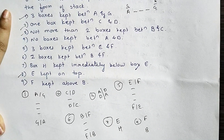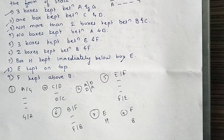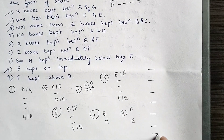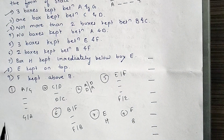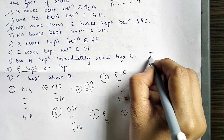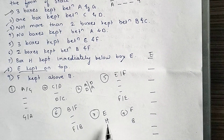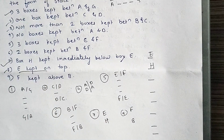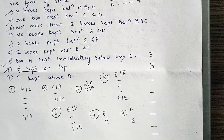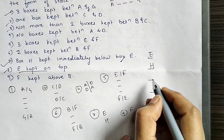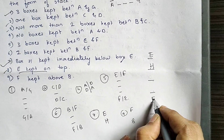We have 8 positions in the stack — 1 through 8. Starting with the direct statement: E is kept on the top, so E is at position 1. H is immediately below E, so H is at position 2. Next, 3 boxes are kept between E and F — counting 1, 2, 3 below H — so F is placed at position 5. This statement is now clear.